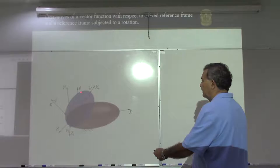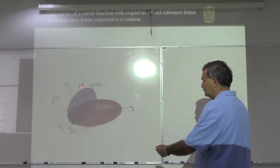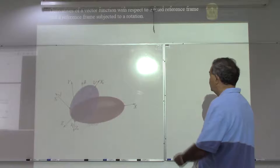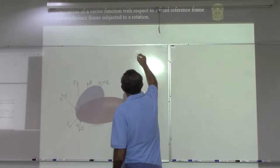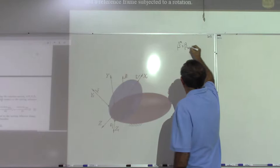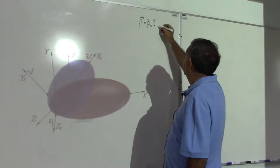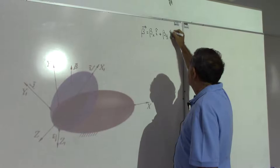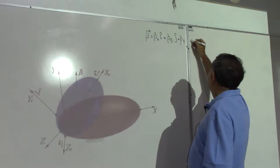We are going to consider the vector function beta and we are going to find the time derivatives of this vector function with respect to the fixed reference frame and with respect to the moving reference frame. First, we are going to see that the vector function beta is given by: bx times the unit vector i, plus by times the unit vector j, plus bz times the unit vector k.